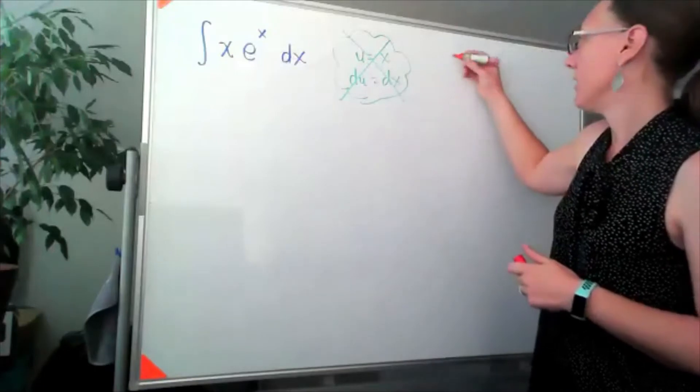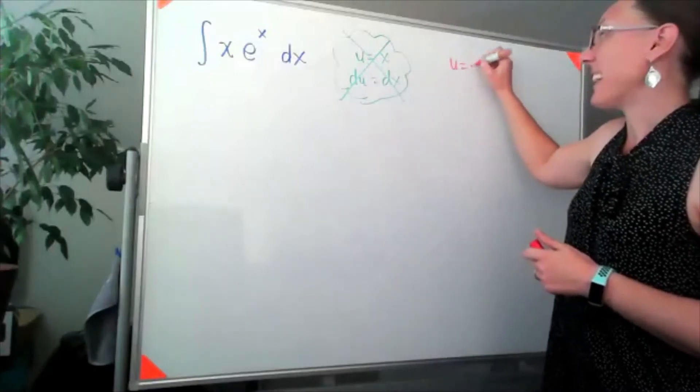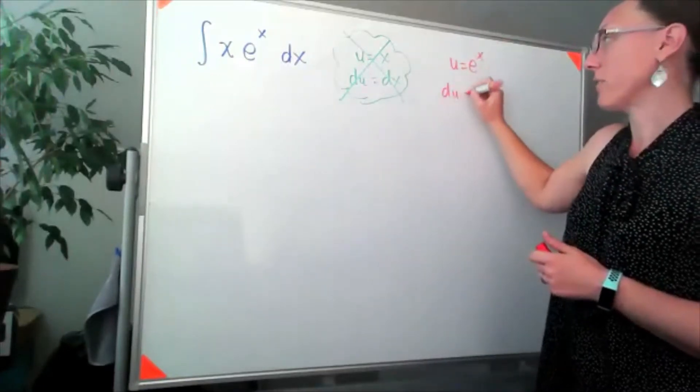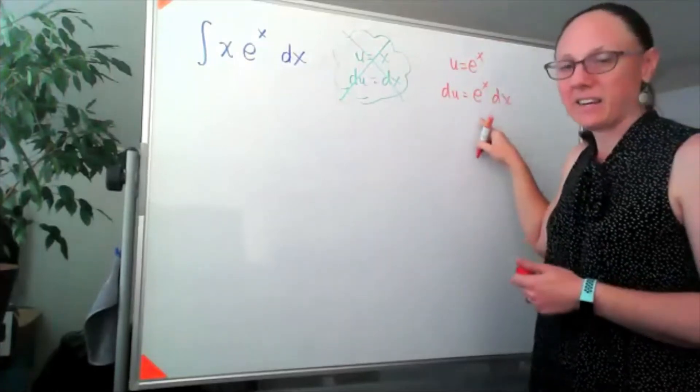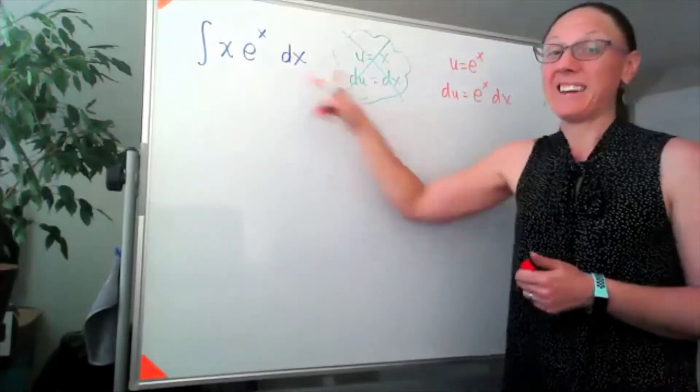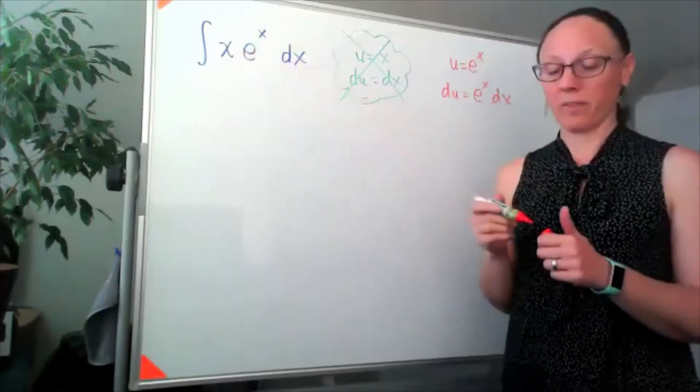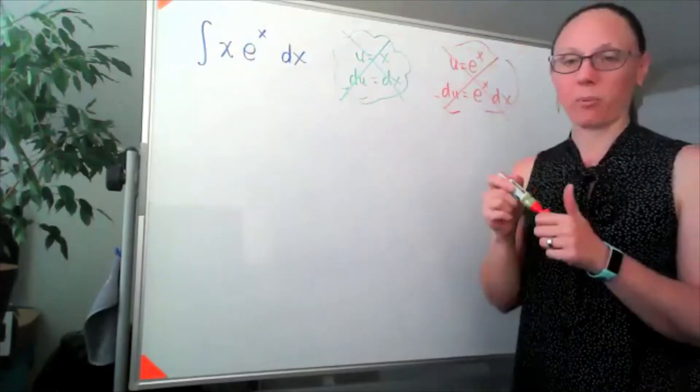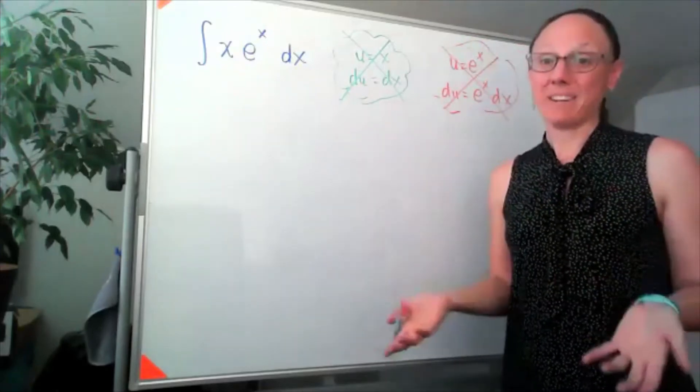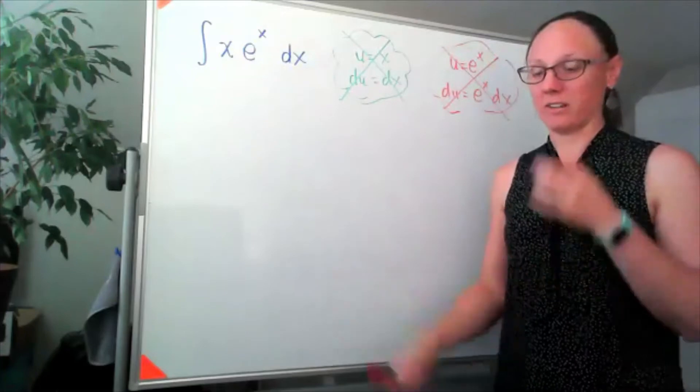Next thing we could try: u could be e^x. But the derivative of e^x is e^x, meaning I'd need another e^x somewhere in the problem. So this, as a u-substitution, also doesn't help. We need a different technique for integrating this.